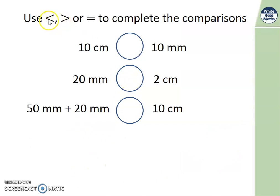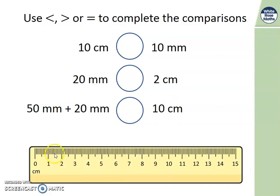Here in these questions we're going to use our symbols: less than, greater than or equal to, to compare these calculations. On this side we have 10 centimetres and this side we have 10 millimetres. Which sign do we need? Have a think. Let's use a ruler to help us compare. This is a centimetre ruler. Let's mark on the 10 centimetres. There it is. And we know that 10 millimetres is actually the same as 1 centimetre. Each one of these little marks is a millimetre. So this is where 10 gets up to here. Therefore, 10 centimetres is greater than 10 millimetres. So we need the greater than symbol in here.